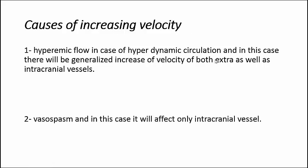What causes increased velocity in intracranial vessels? Two causes: vasospasm, and hyperemic flow as in hyperdynamic circulation such as anemia, fever, or hyperthyroidism. To differentiate between these causes: hyperemia is a systemic phenomenon affecting velocity in both extracranial and intracranial vessels, but vasospasm is a local process affecting only intracranial vessels. We can use a formula for this.